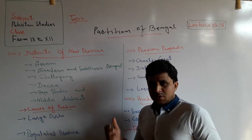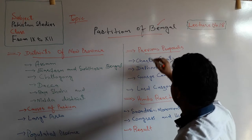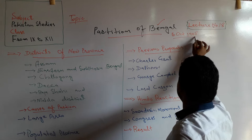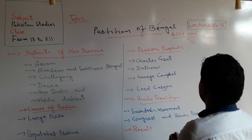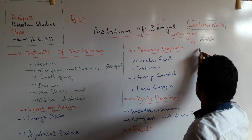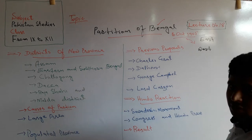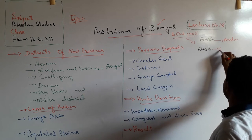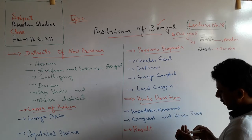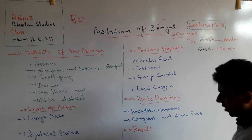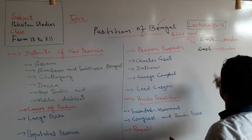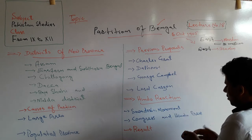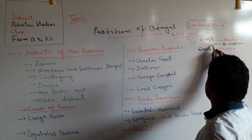Assalamu alaikum, dear friends. I am Sajid Ali. The topic under discussion is the Partition of Bengal. It was divided on 16 October 1905 into two parts: the East wing and the West wing. In the East wing, Muslims were in majority. The total population of East Bengal was 31 million, out of which 18 million were Muslims.